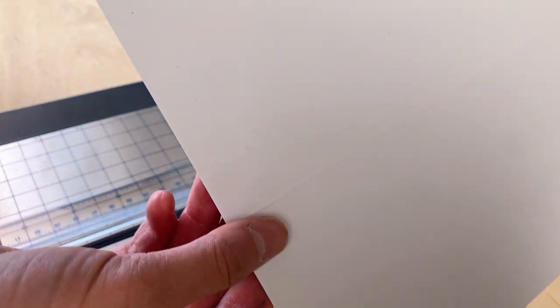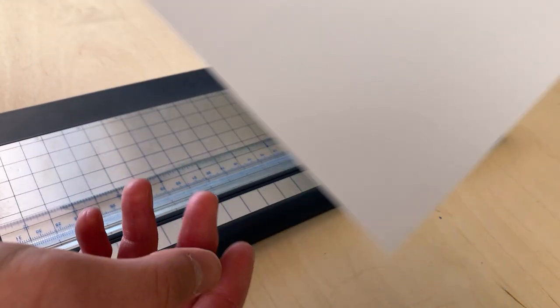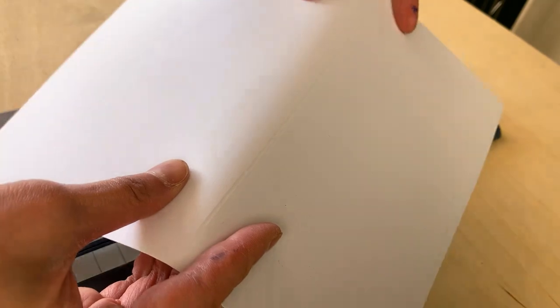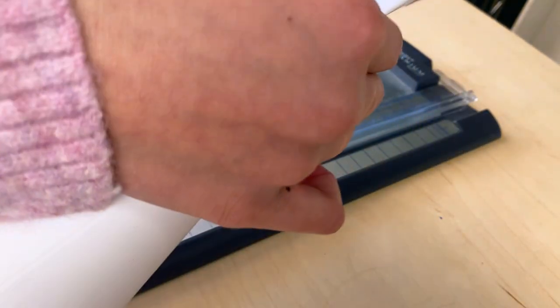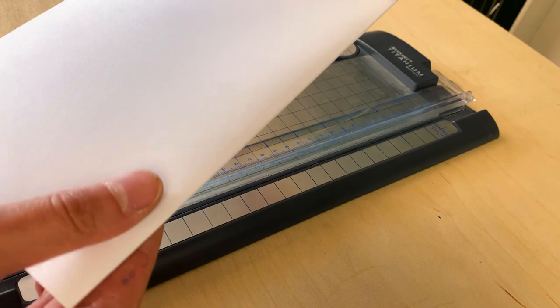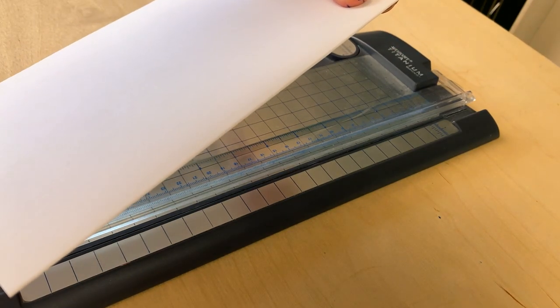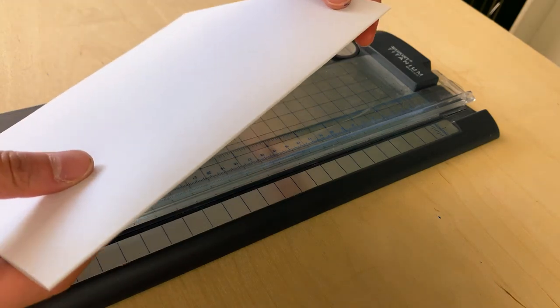And the last thing I want to mention is from which direction to fold after you score. So I typically score from the outside of the fold. So when I score, the score mark will be indented where I have placed my stylus. Whereas on the other side, it will have a bump. And I fold the paper where it's bumpy. So I fold it so that the bumpy side is on the inside and the indented side is outside.